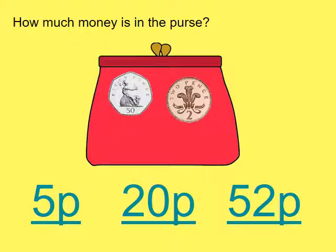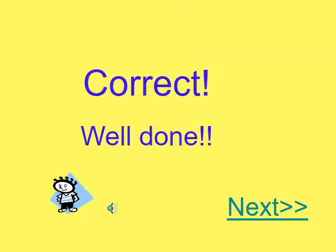Take a look at the purse on the screen. How much money is in the purse? We have a fifty pence coin and a two pence coin. How much is that all together? Can you point to the correct amount at the bottom of the screen? Yes, that's correct, it's fifty-two pence.